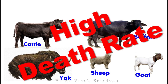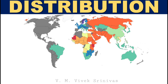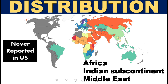Death rates during outbreaks were usually extremely high, approaching 100%. Sheep and goats can be infected but rarely show clinical signs. This infection was once common and highly prevalent in Africa, the Indian subcontinent, and the Middle East, and was never reported in the United States.